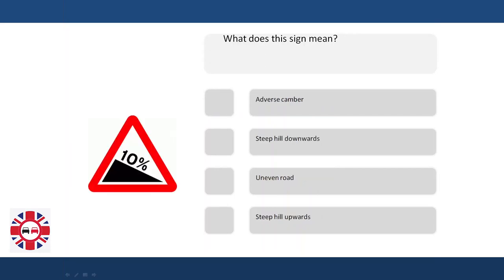What does this sign mean? Adverse camber? Steep hill downwards? Uneven road? Steep hill upwards?